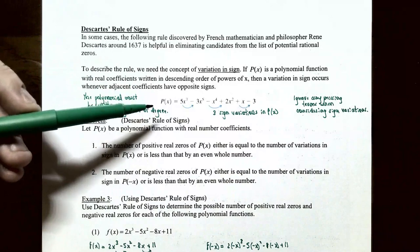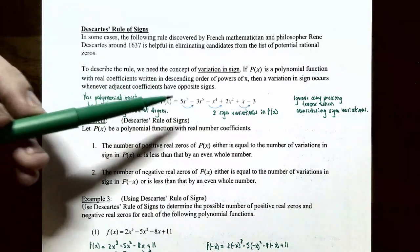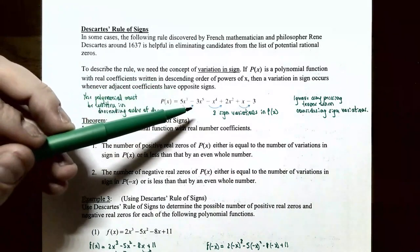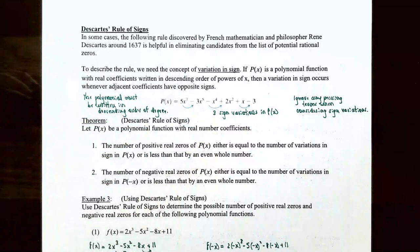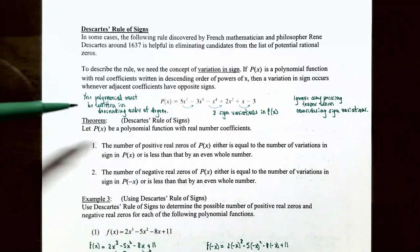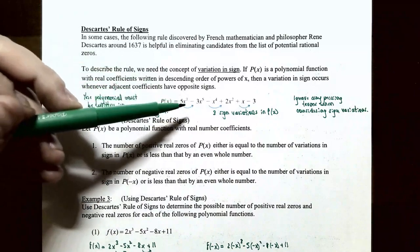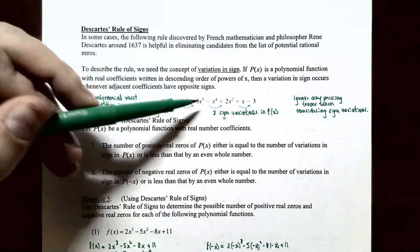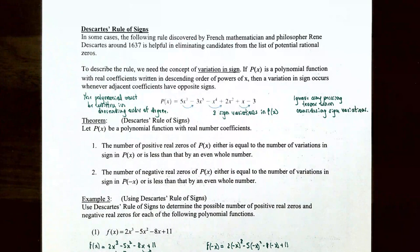Let's say we have the polynomial function P of x equal to 5x to the 7th minus 3x to the 5th minus x to the 4th plus 2x squared plus x minus 3. Notice that this polynomial function is written in descending order of degree — the highest power of x is first, then the next highest, and so on down to the constant term.